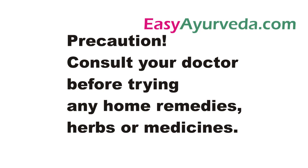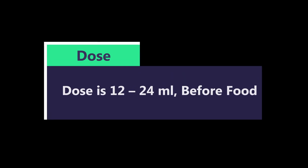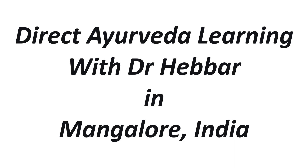The dose and timing of the medicine depend on the decision of the prescribing doctor. Usually it is prescribed in the dose of 12 to 24 ml before food at about 6 am and 6 pm, or as directed by your Ayurvedic doctor. It is usually advised to consume this medicine by adding an equal amount of water to the Kashayam. If required, it can be taken along with a teaspoon of sugar or jaggery.